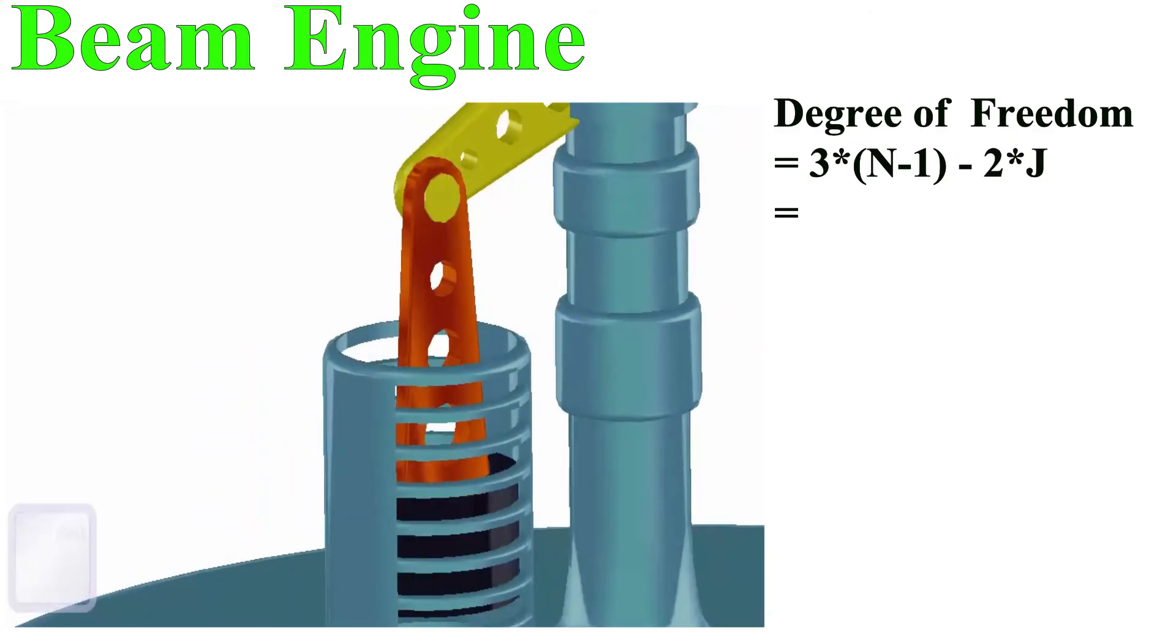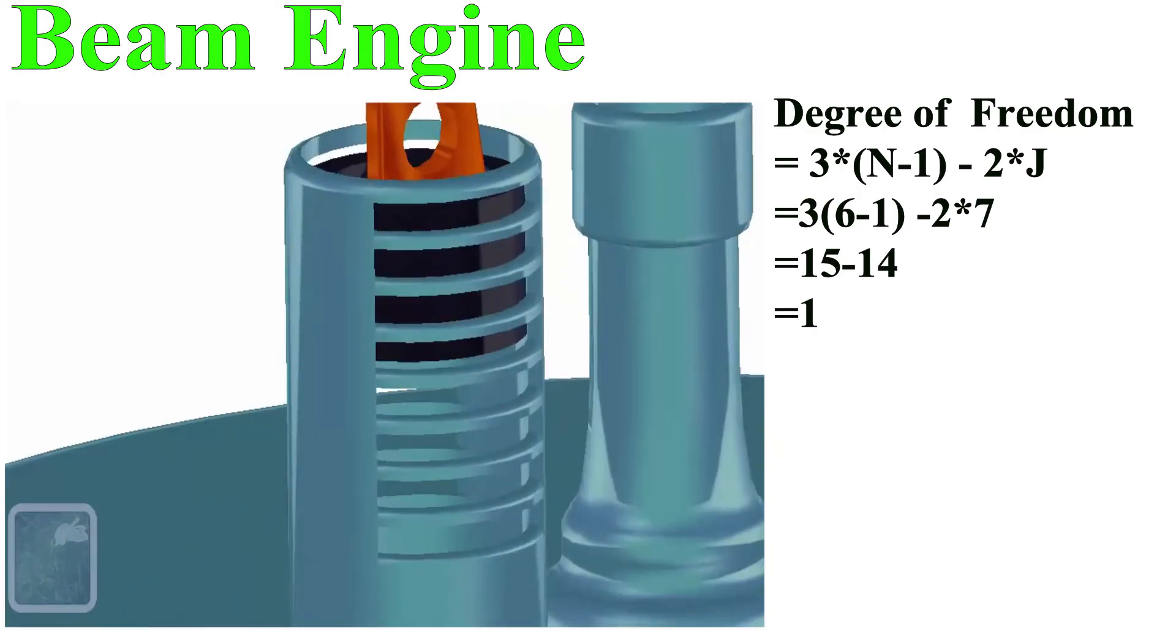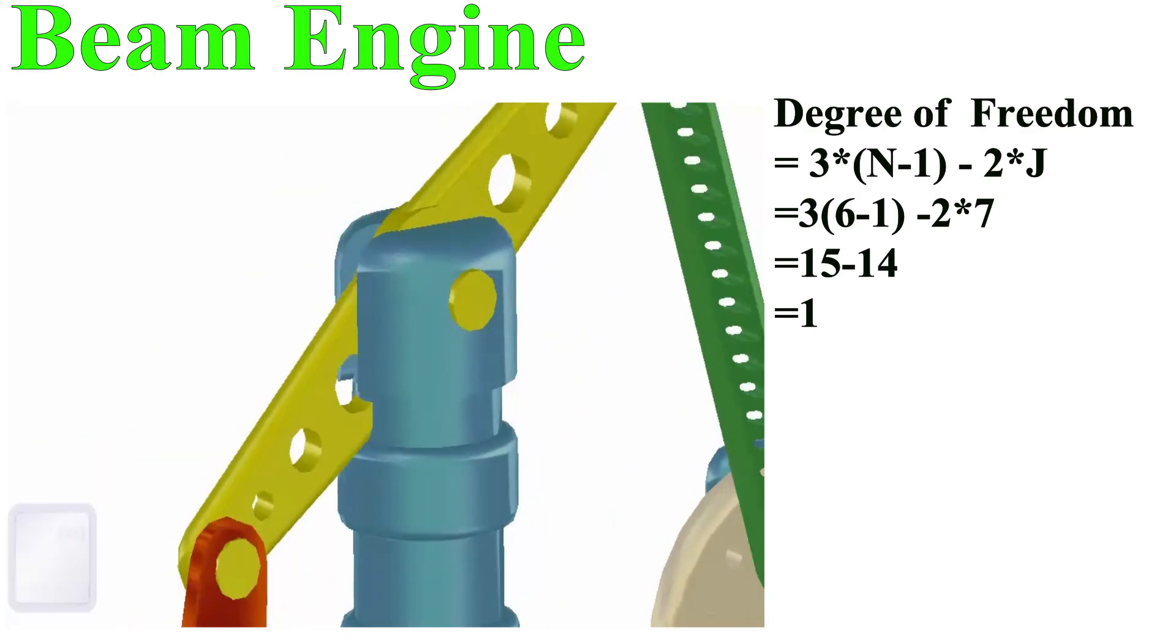So 3(6-1) - 2(7) equals 15 minus 14, equals 1.